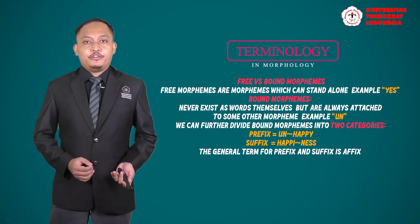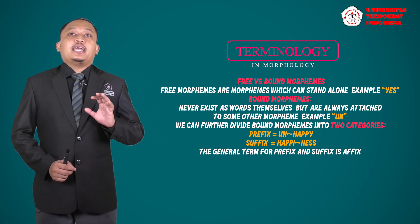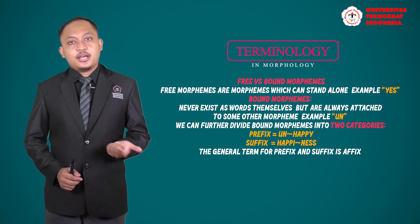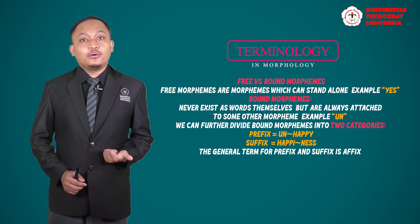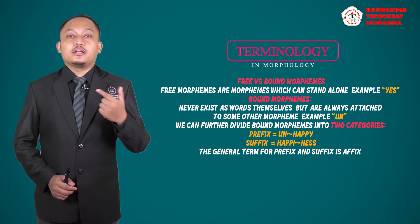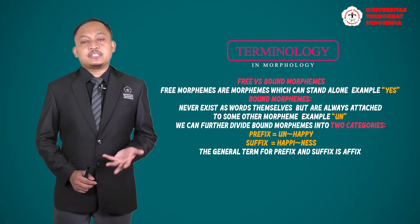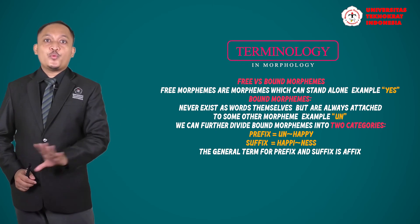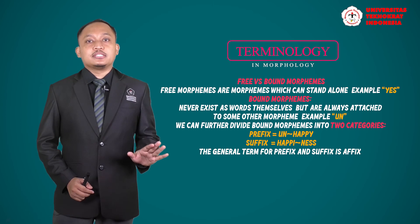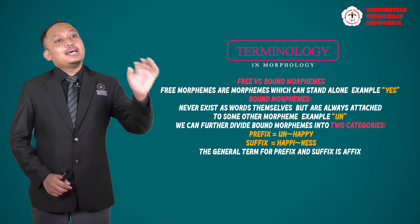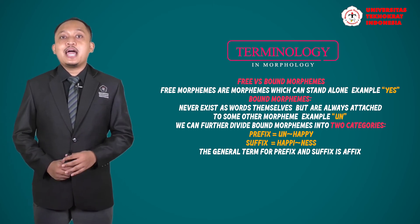Another example of a bound morpheme is in the word 'happiness.' It has two morphemes: 'happy' and '-ness.' 'Happy' is a free morpheme and can stand alone, meanwhile '-ness' cannot stand alone, so it is a bound morpheme. Compared to the previous example, 'un-' appears at the beginning — we call that a prefix — while '-ness' appears at the end and is called a suffix.